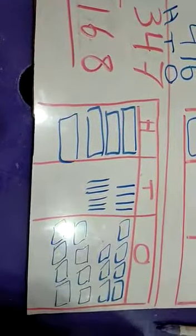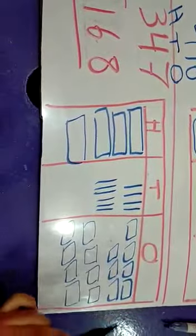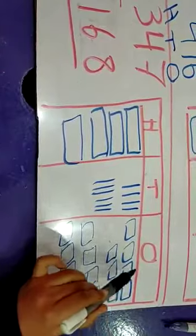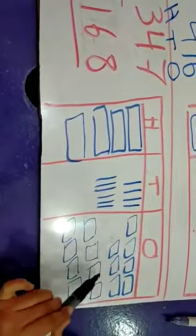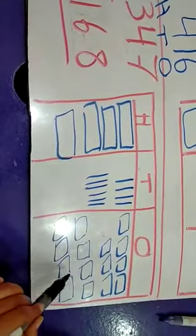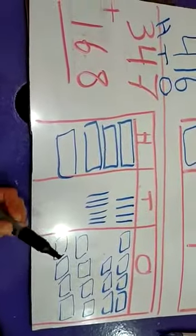let's count all of them. How many ones do we have? 1, 2, 3, 4, 5, 6, 7, 8, 9, 10, 11, 12, 13, 14, 15. Can we put 15 in ones?